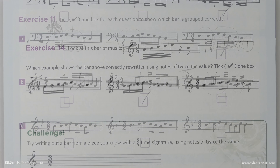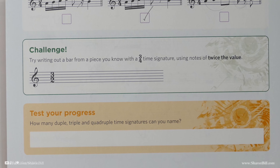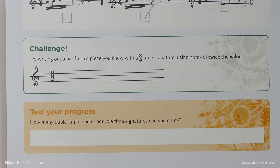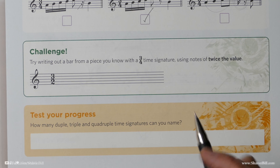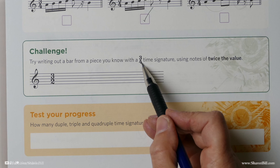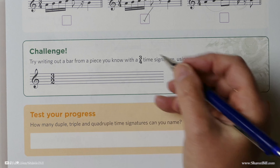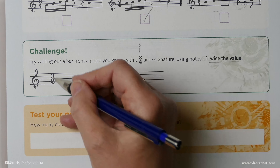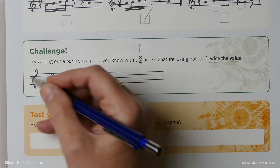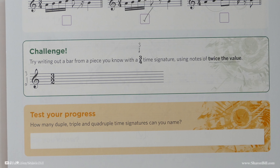We get the opportunity to do this for ourselves from a piece of music that we know. The exercise asks us to find a piece of music with a 3/4 time signature and then change it to twice the value. They've done the time signature for us here — we've gone from 3 crotchet beats per bar to 3 minim beats per bar, so everything is going to double.